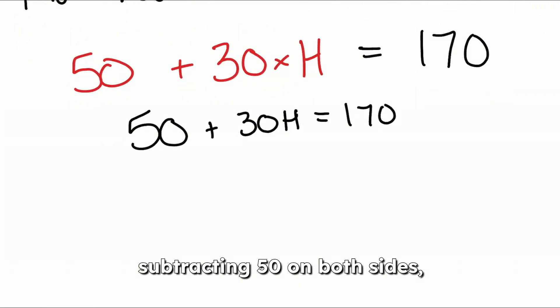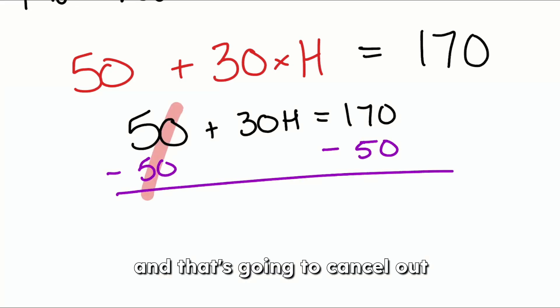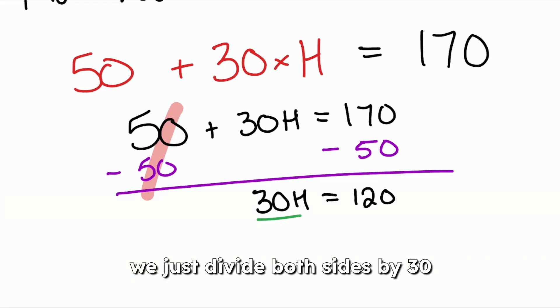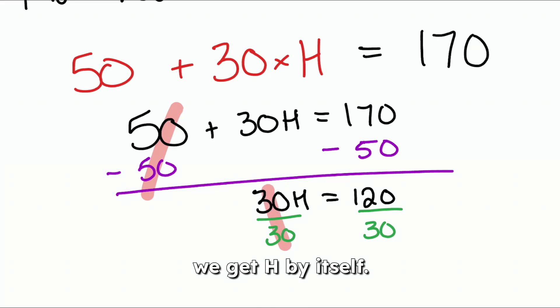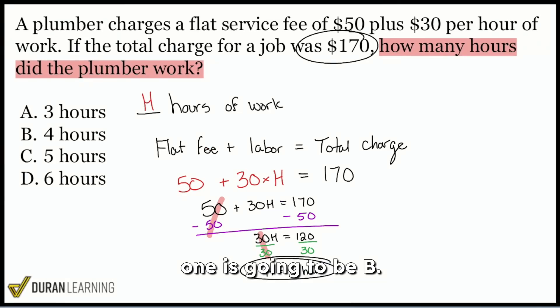What this is going to look like is 50 plus 30H equals 170. Solving this beginning by subtracting 50 on both sides. And that's going to cancel out on the left, leaving us with 30H equals 120. Lastly, we just divide both sides by 30, and we are good. Because now we get H by itself, and so the number of hours that this plumber worked is four hours. So the answer to question number one is going to be B. Hopefully you got it right. And even if you didn't, remember, the goal here is to learn from every mistake.